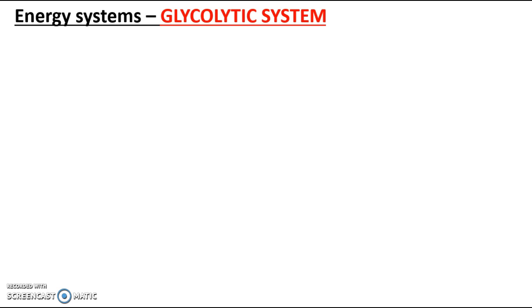That was our last system. We looked at the advantages and disadvantages of that. When we use the ATP-PC system for high intensity energy synthesis, it gives us up to 10 seconds. At that point, as we evaluated, PC runs out at 10 seconds, so our system to re-synthesize ATP switches to the glycolytic system.